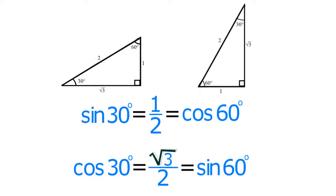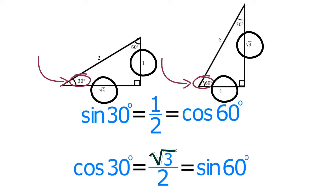When you change the value of theta from 30 degrees to 60 degrees, the opposite and adjacent legs are exchanged. This change causes the values of sine and cosine to be exchanged as well.